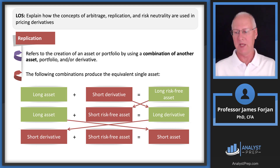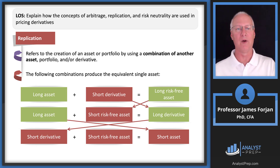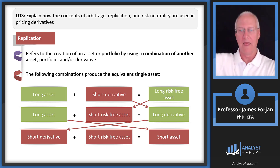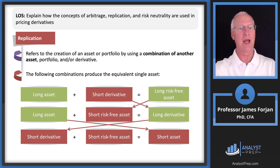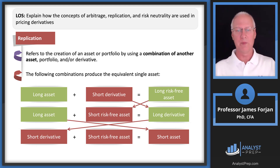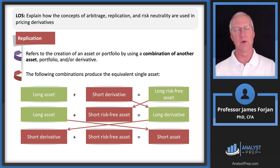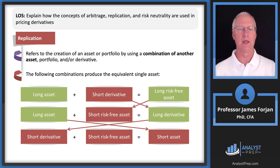If I combine ownership of my putter and a forward contract to sell it to you next summer, what I'm doing is replicating the performance of a risk-free asset. Owning the putter and writing the derivative contract with you is exactly like buying a Treasury bill — one that matures on the date we agreed to sell the putter. By simply adding and subtracting from each side, we can take long and short positions to replicate a position in one asset. This replication strategy is important not only today but even more so at Level 2.